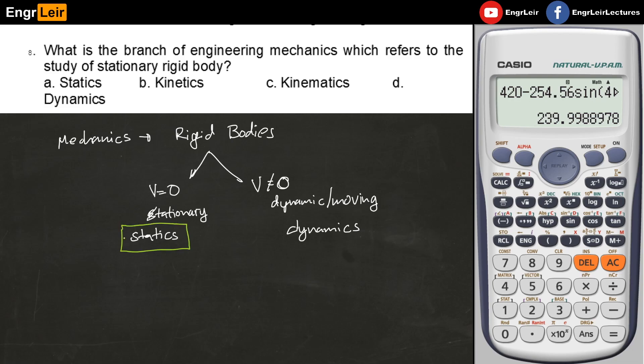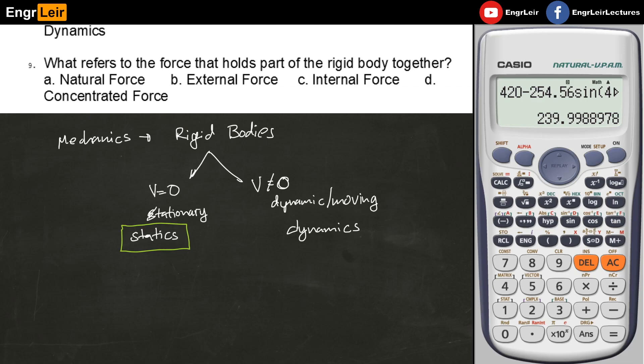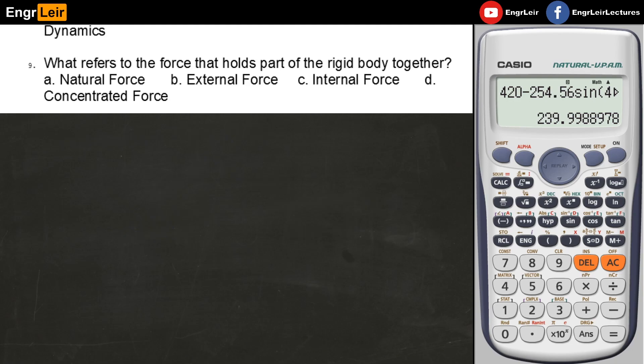What refers to the force that holds part of the rigid body together? Part of the rigid body together. If I have a rigid body, let's say I have a plate like this, and I apply forces P - let's identify. The force P, we call this an external force. External forces. Now, if I cut my body in an inclined position like this, I've cut it and exposed what we call internal forces.